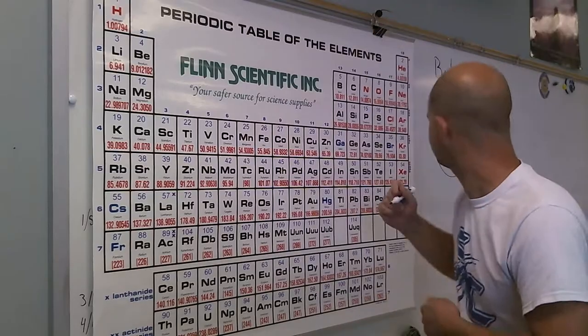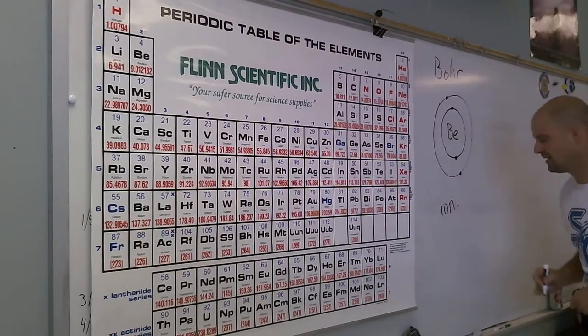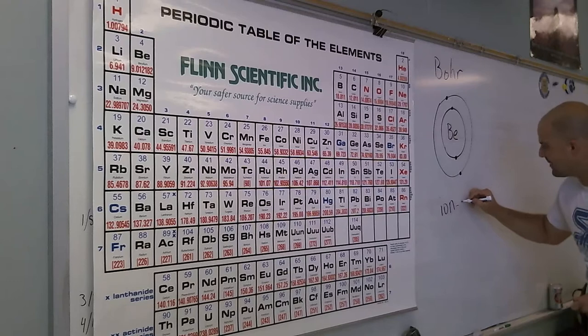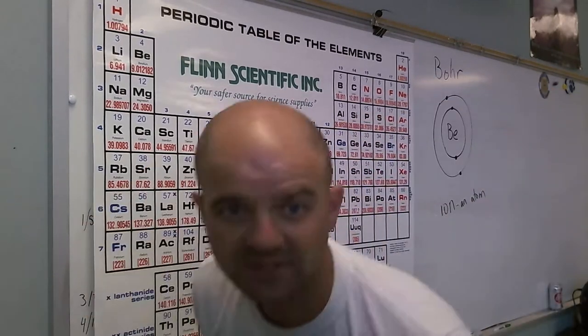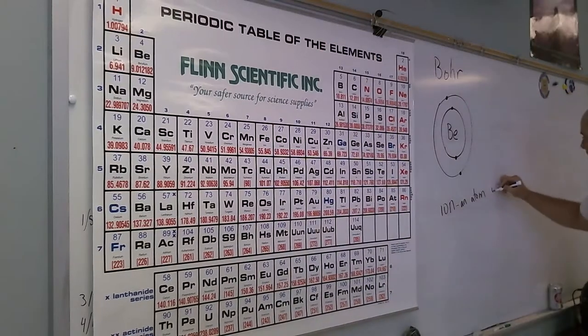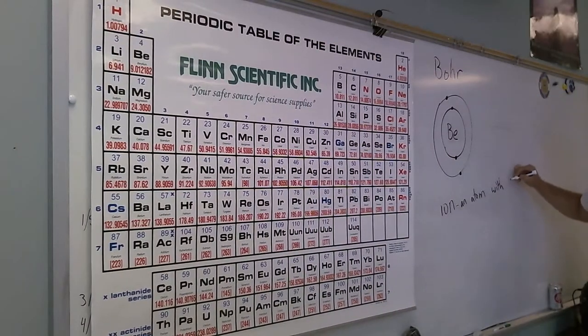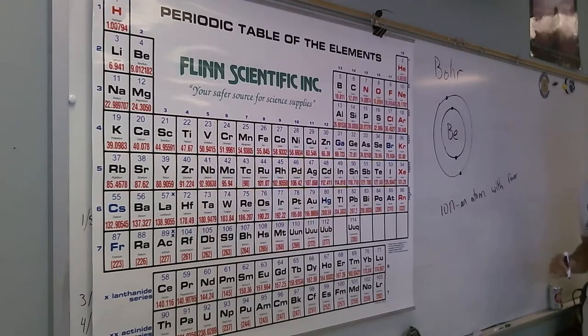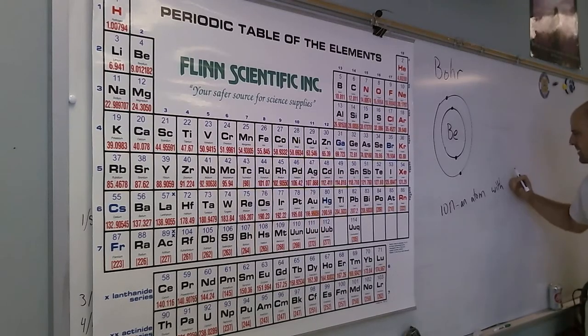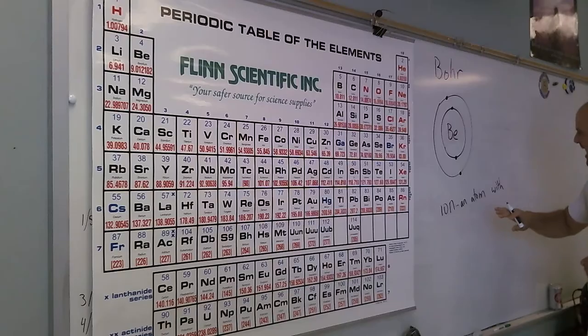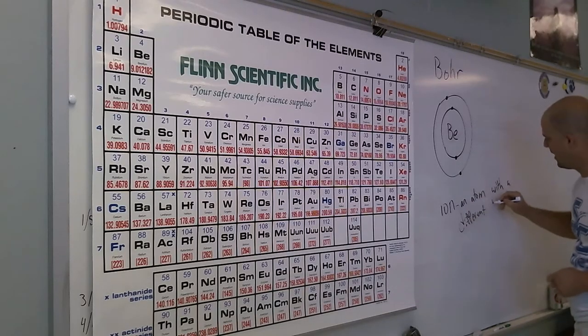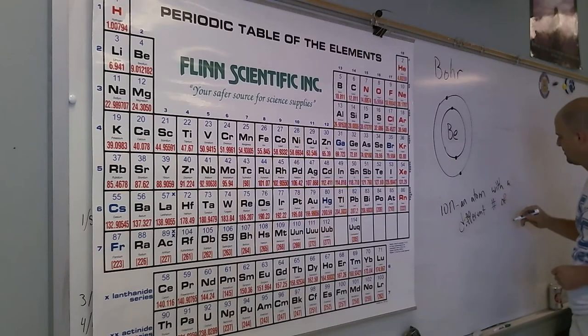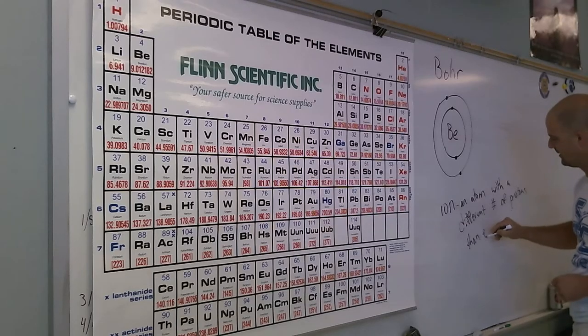I've gotten to the point where I really probably ought to just define ion. So write this down. An ion, I-O-N, is an atom with a different number of protons than electrons.